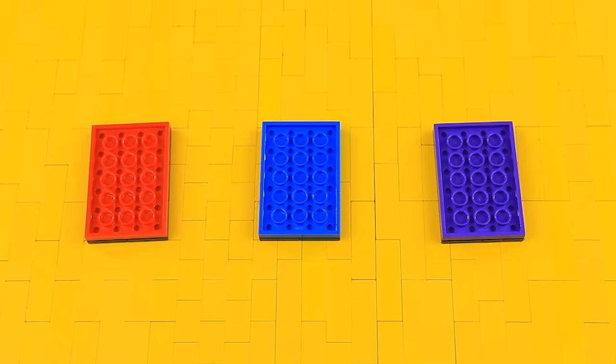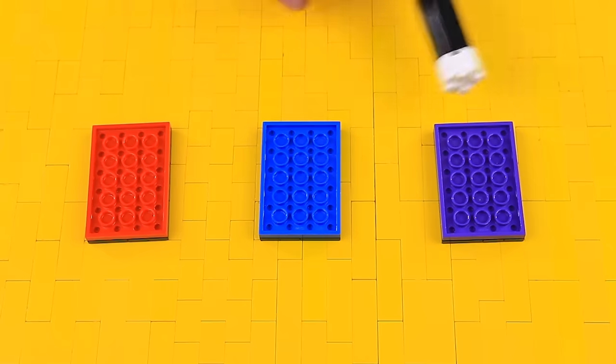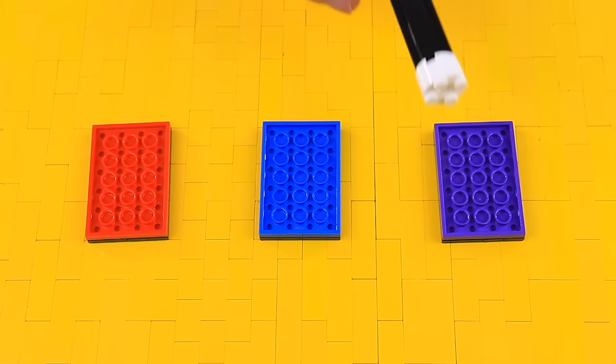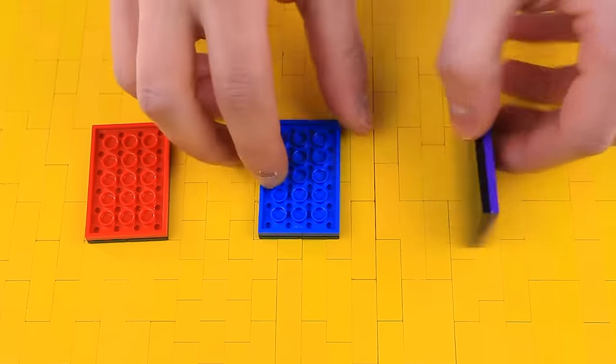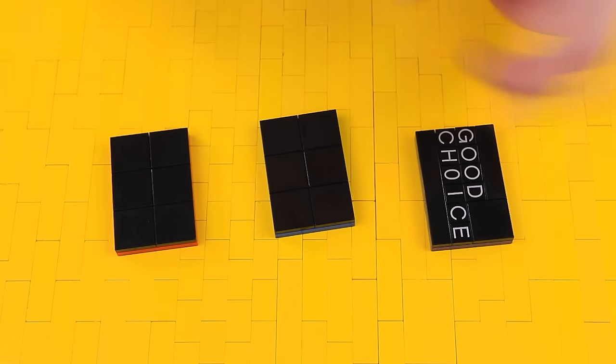The secret behind it is that there's a different revelation for each prediction. You're probably thinking, okay, what does that mean? So you have them choose with the wand which one they want. If they choose purple, you tell them to flip over the cards and you see good choice. Wow. Amazing.